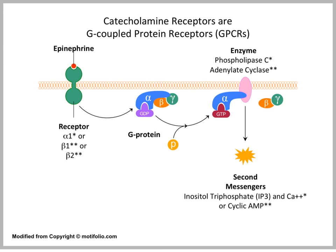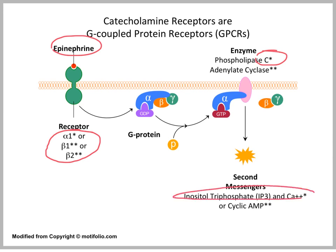In this cartoon, we have a depiction of the typical catecholamine receptor as a G-protein-coupled receptor. We show epinephrine binding to its receptor — it can bind to any of the receptors we just described. To highlight: the alpha-1 receptor through its G-coupled protein stimulates phospholipase C, leading to inositol triphosphate and calcium. Whereas the beta-1 or beta-2 receptors go through a G-protein-coupled receptor to adenylate cyclase and produce cyclic AMP.